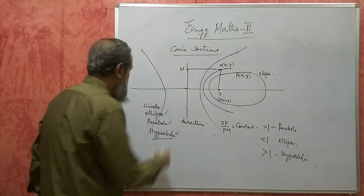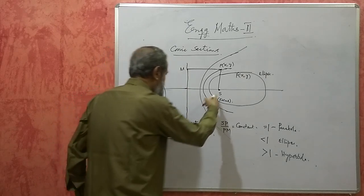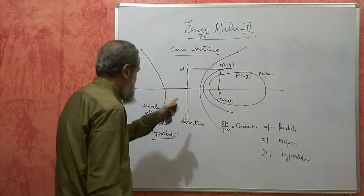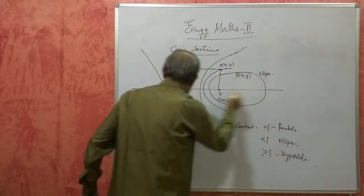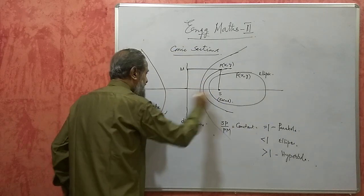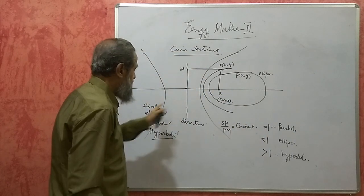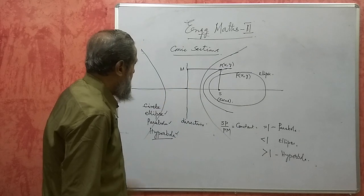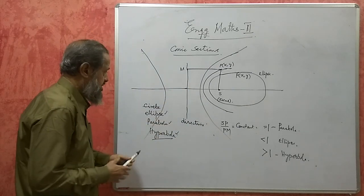This line is called the directrix. This fixed point is called the focus, and this is called the axis of the curves. All three curves are conic sections.